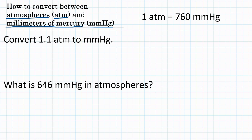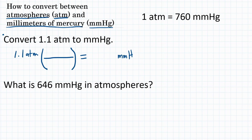We're going to do a simple unit conversion where we multiply what the problem gives us by a conversion factor. In this example, we're going to convert 1.1 atmospheres to millimeters of mercury. We'll start with 1.1 atmospheres and multiply by a conversion factor, which is a fraction, and that will get us to millimeters of mercury.